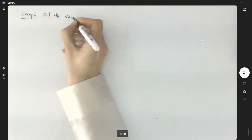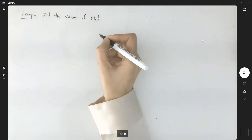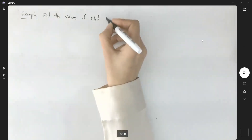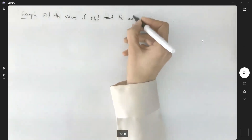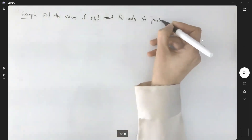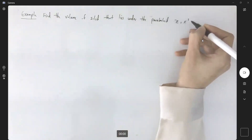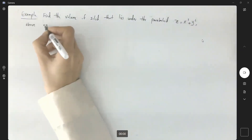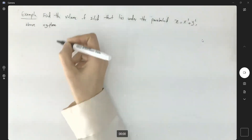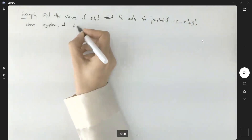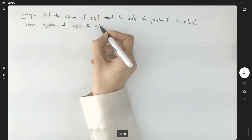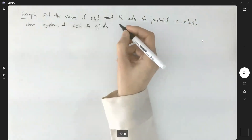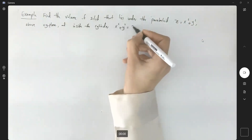Our next example: find the volume of the solid that lies under the paraboloid z equals x squared plus y squared, above the xy-plane, and inside the cylinder whose equation is x squared plus y squared equals 2x.